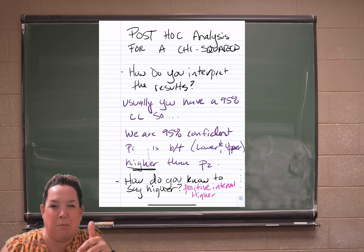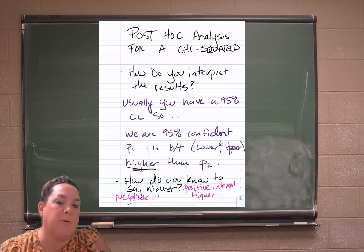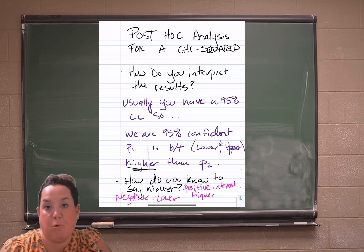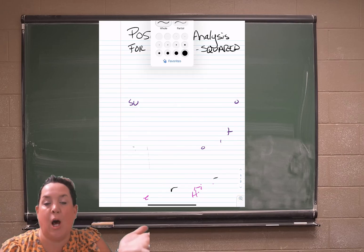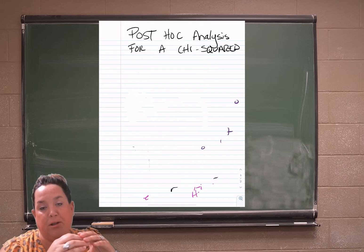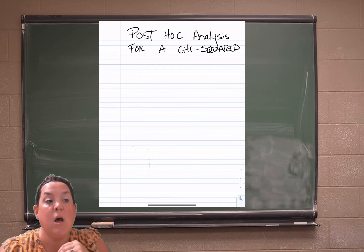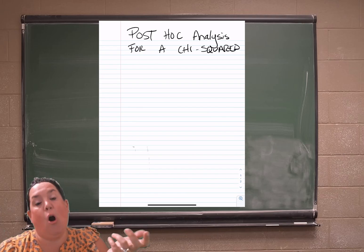Now you have to define p sub one and p sub two. And we've defined proportion, population proportion parameters before, but essentially you're going to say the proportion of, and then whatever that population is or that group for the explanatory variable one. So the proportion of, let's say dogs.